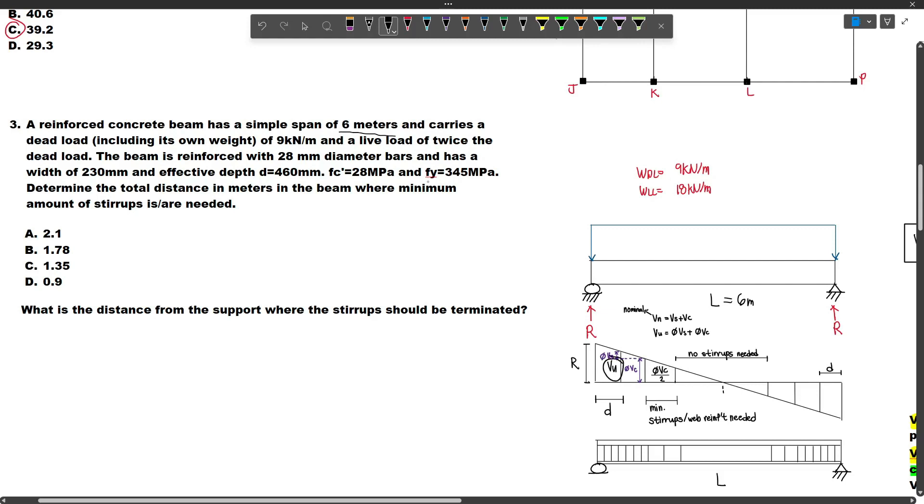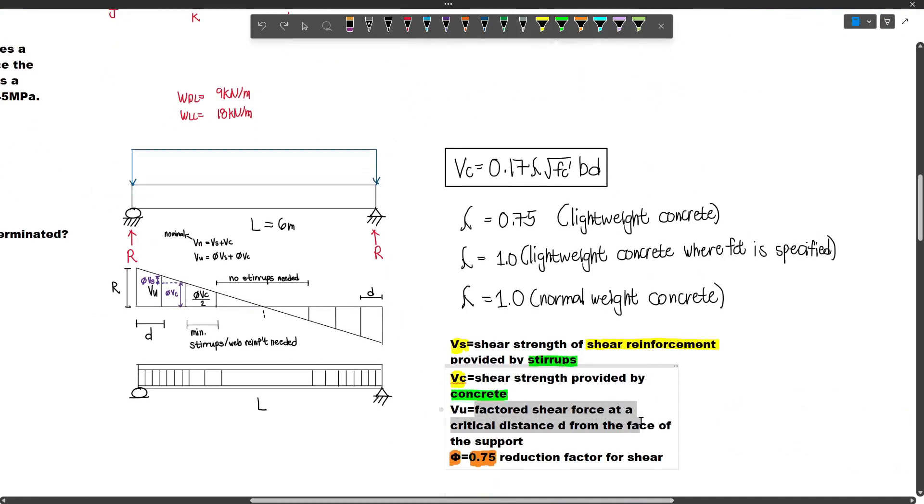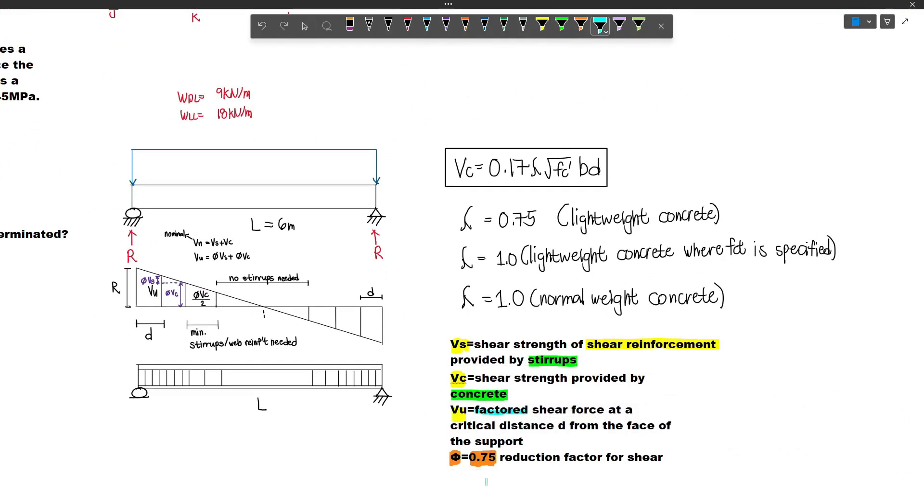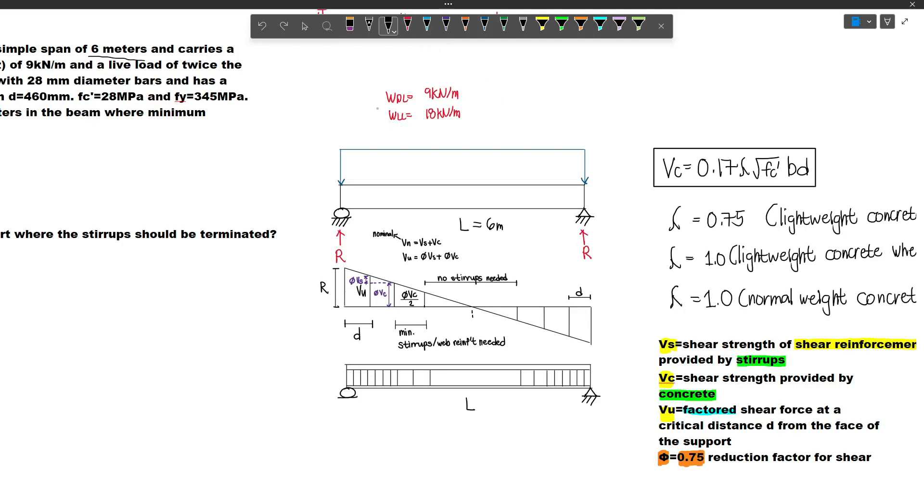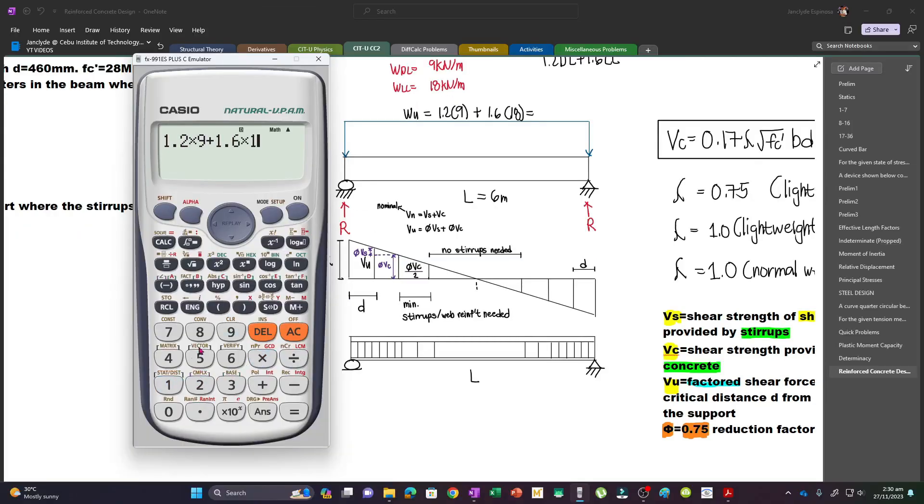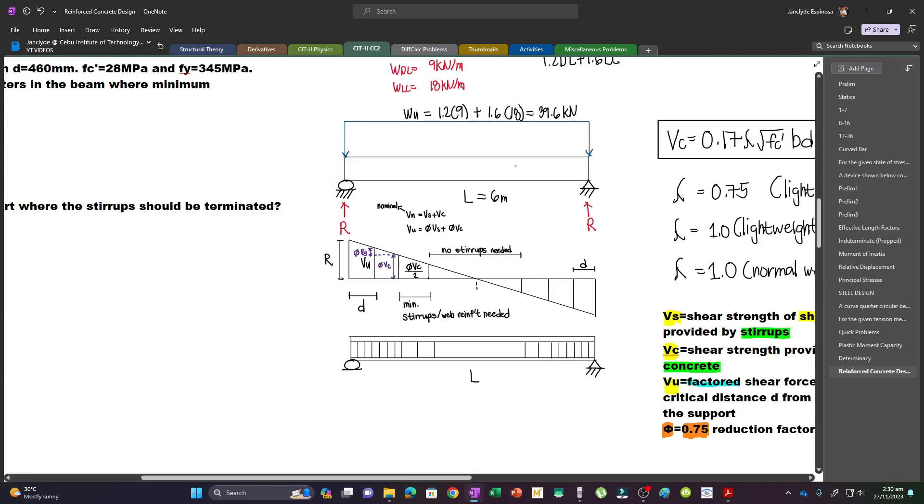However, we are interested in VU, which is the factored shear force at a critical distance d from the face of the support, which means it needs to be factored. So we need to find WU. Our load factor is 1.2DL plus 1.6LL. This becomes 1.2 multiplied by the dead load which is 9, plus 1.6 multiplied by 18, which equals 39.6kN/m.